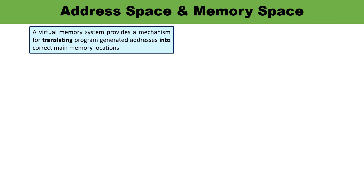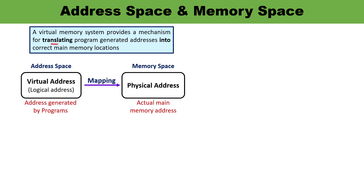Coming back to the concept of virtual memory: virtual memory provides a mechanism for translating or mapping program-generated addresses into the correct main memory locations. This is done dynamically — even during execution of the program in the CPU. This translation or mapping is handled automatically by hardware with the help of mapping tables.